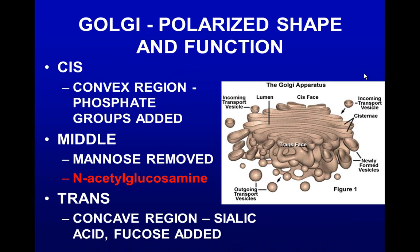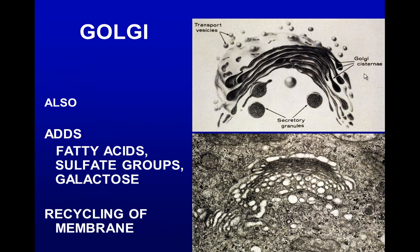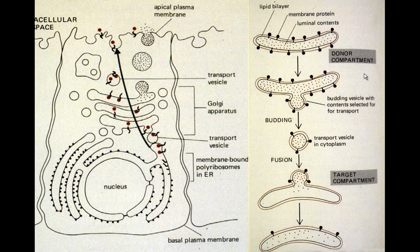The Golgi apparatus is polarized, with different portions. Phosphates are added in the cis part. Mannose is removed in the mid part, and other sugars are added there as well. Additional sugars are added in the trans part. In addition to sugars, the Golgi adds fatty acids, sulfur groups, and galactose. It also participates in recycling — once it dumps its cargo, empty vesicles can come back to recycle the membrane.